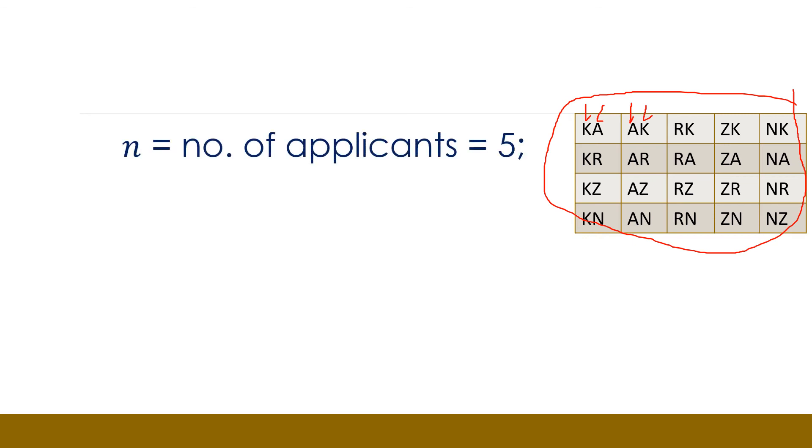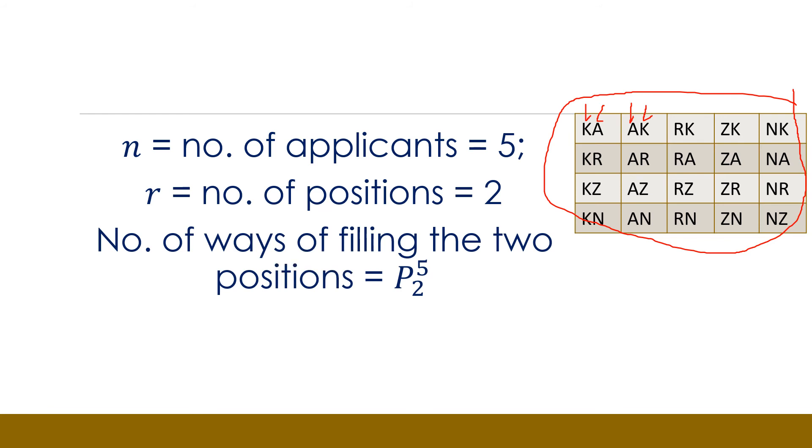So if we are using permutation, then the number of applicants is going to be equal to five, which gives us N. And the number of positions to be filled is going to be equal to the number of arrangements we are making, and that is two. So R is two, N is five. So the number of ways of filling these two positions is going to be given by five permutation two, which when we use a calculator will give us five over five minus three factorial. And using canceling out this, we get the answer is 20, which is the same as what we got when we used the table.